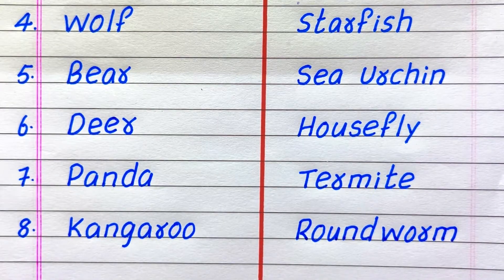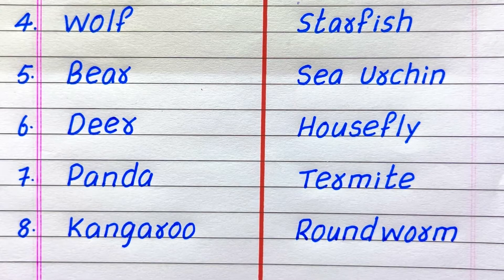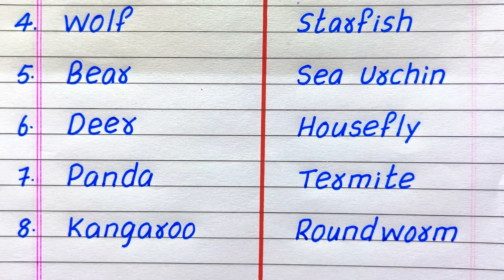Fourth example of a vertebrate animal is wolf, fifth bear, sixth deer, seventh panda, eighth kangaroo.